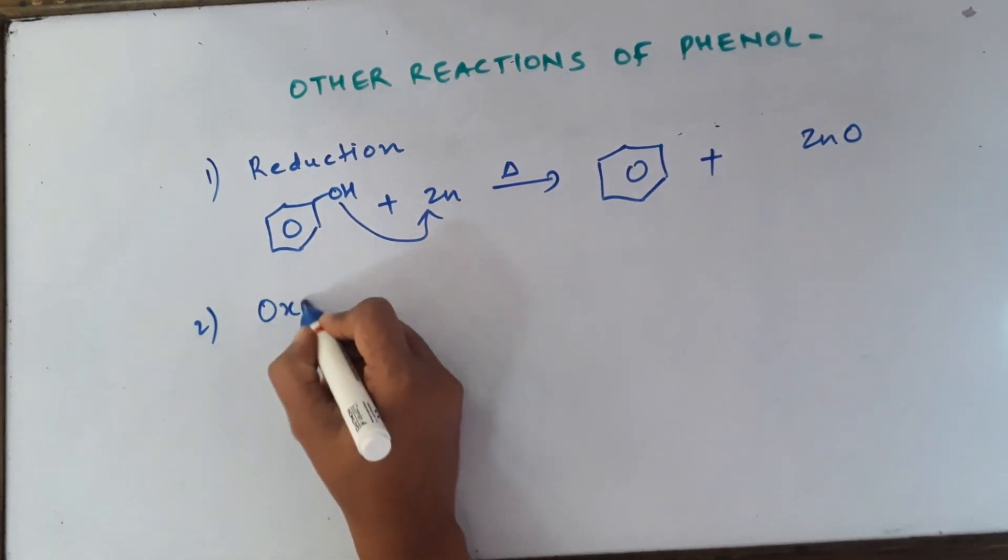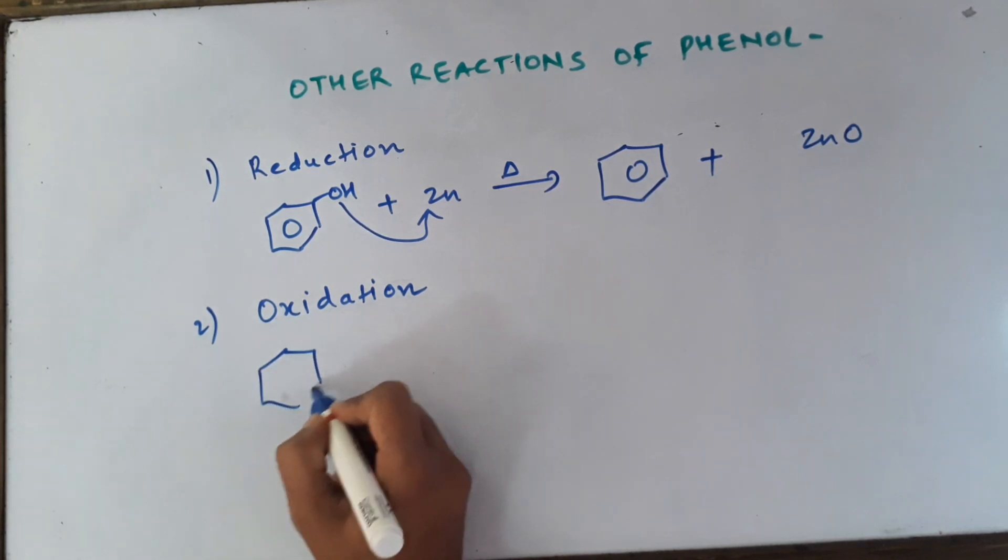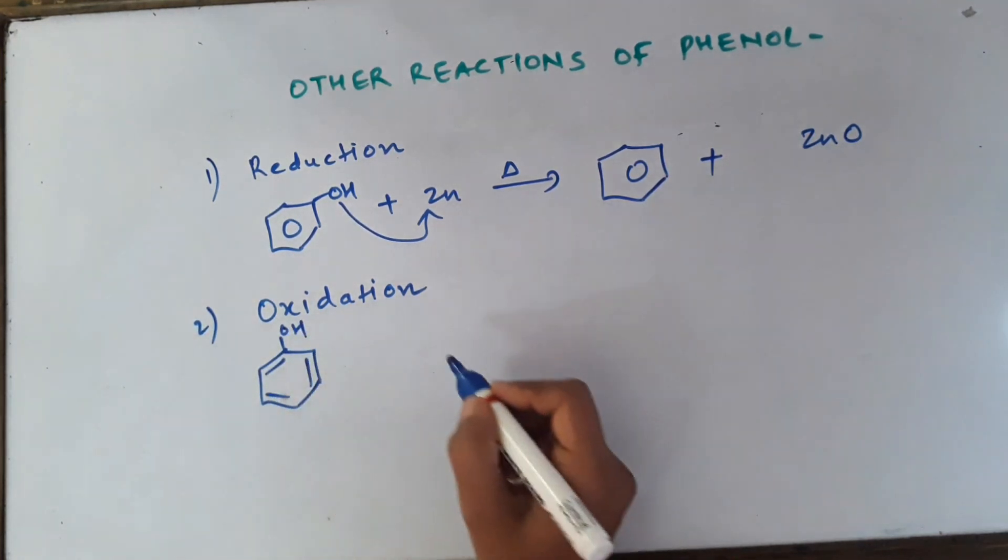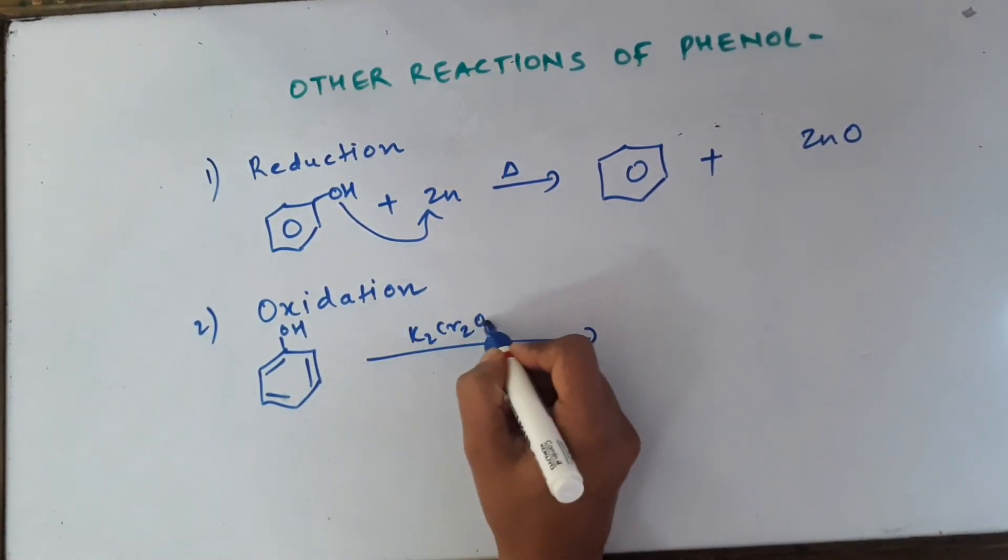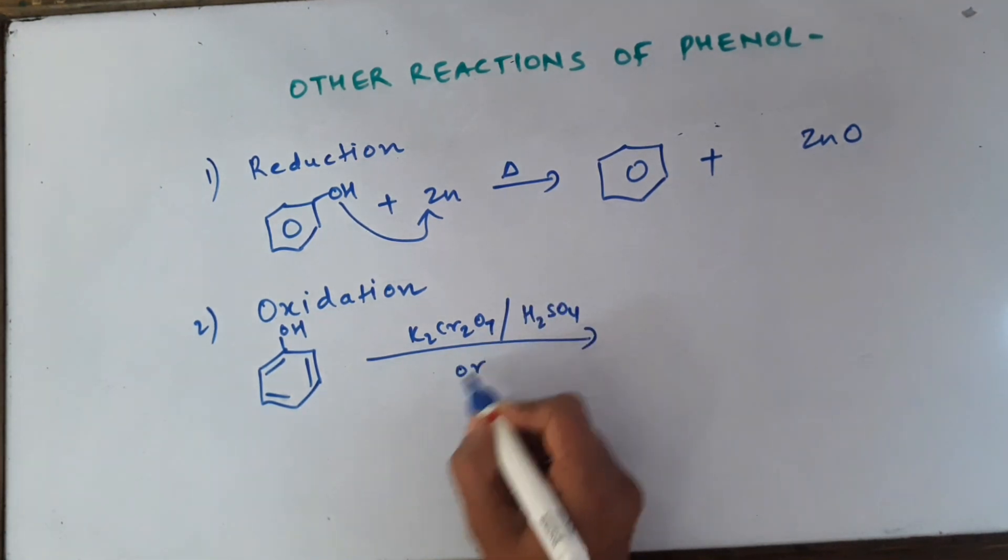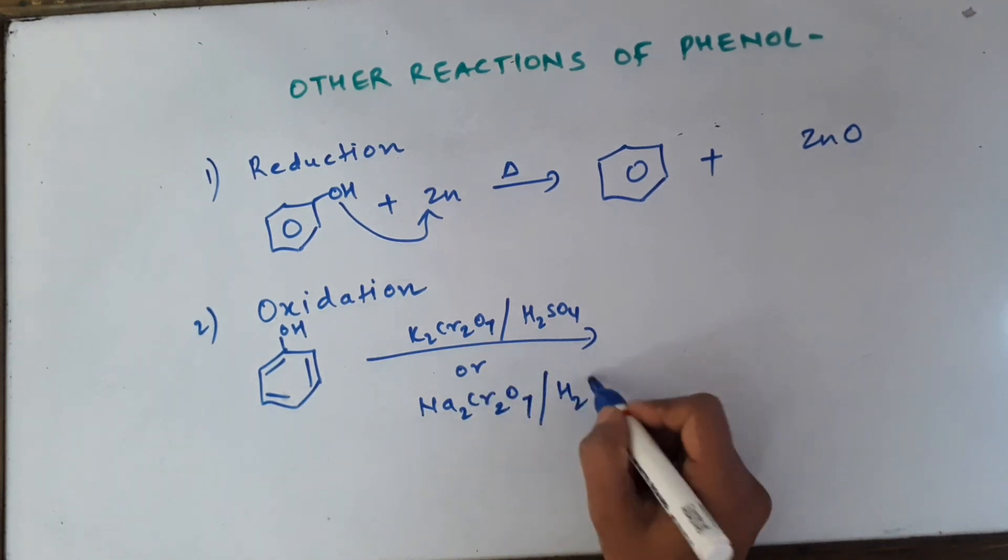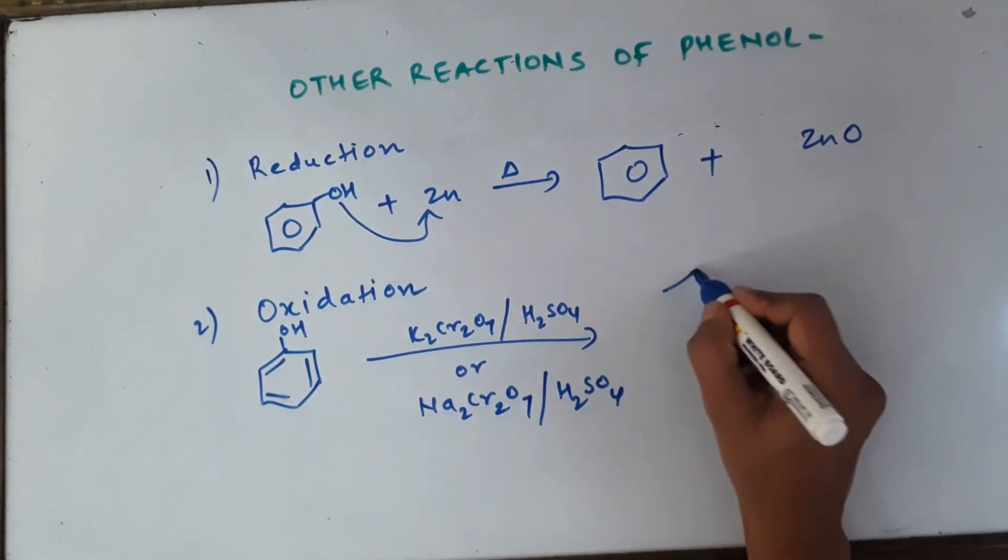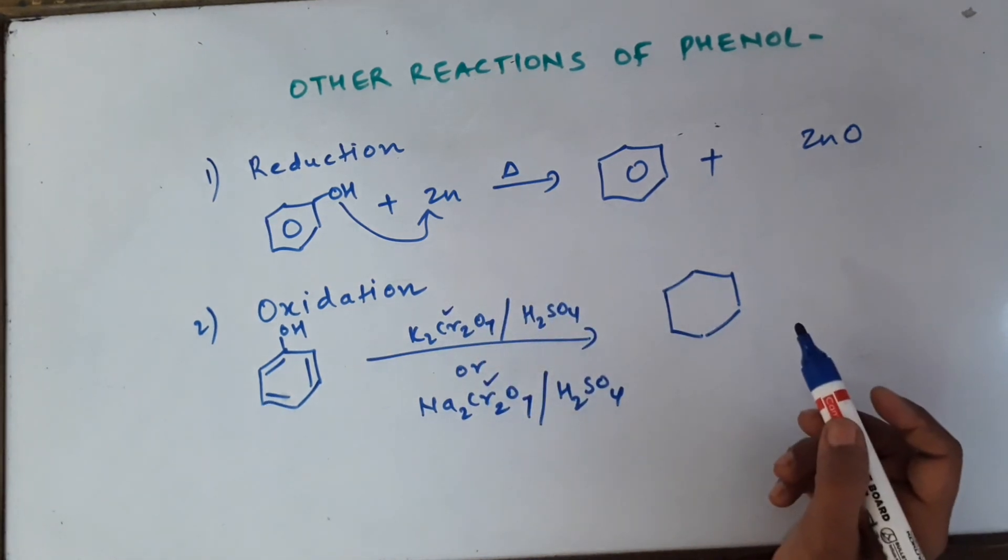The second reaction of phenol is oxidation of phenol. If you leave phenol or just open the bottle of phenol, automatically it gets oxidized due to the air which is present around it. Or you can carry out this reaction also by using acidified potassium dichromate or acidified sodium dichromate. You can see the formulae which I am writing here. These two are very good oxidizing agents. Both are orange in color and both are chromium salts belonging to D-block elements.